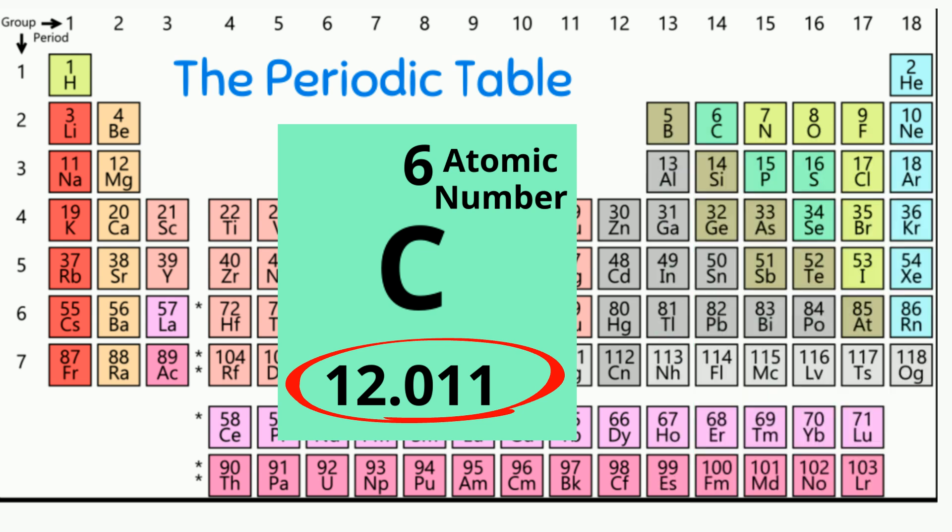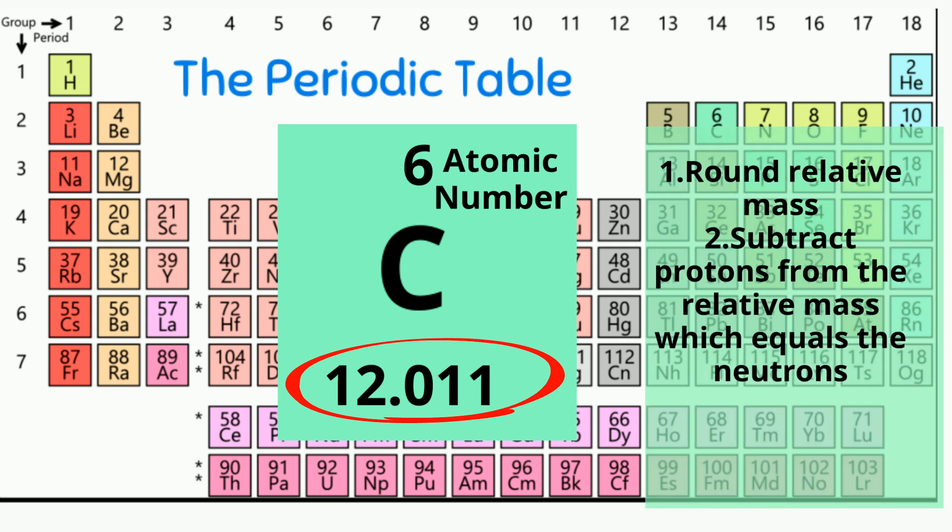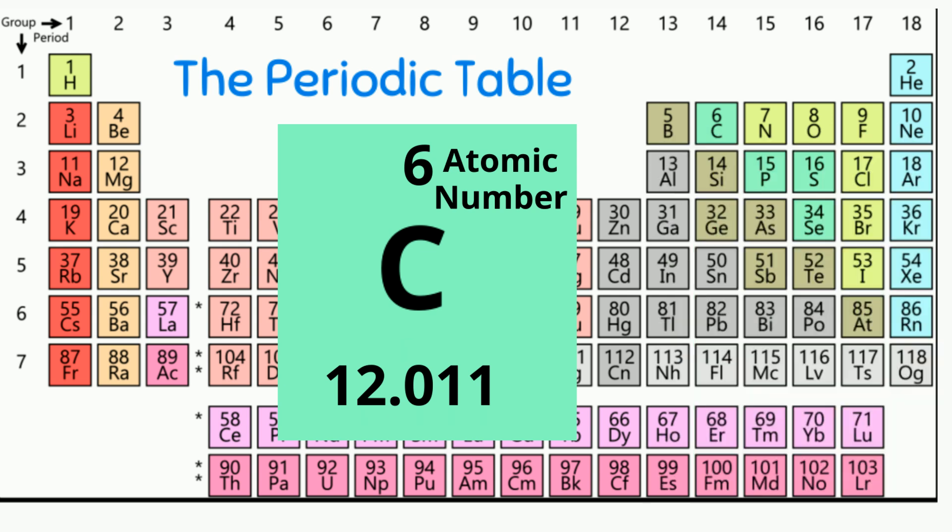To find the number of neutrons of the element by using the relative mass, first round the relative mass to its nearest whole number, in this case 12. You then can use the formula: mass number equals protons plus neutrons. Since you have 6 protons, a relative mass number of 12, you must have 6 neutrons.